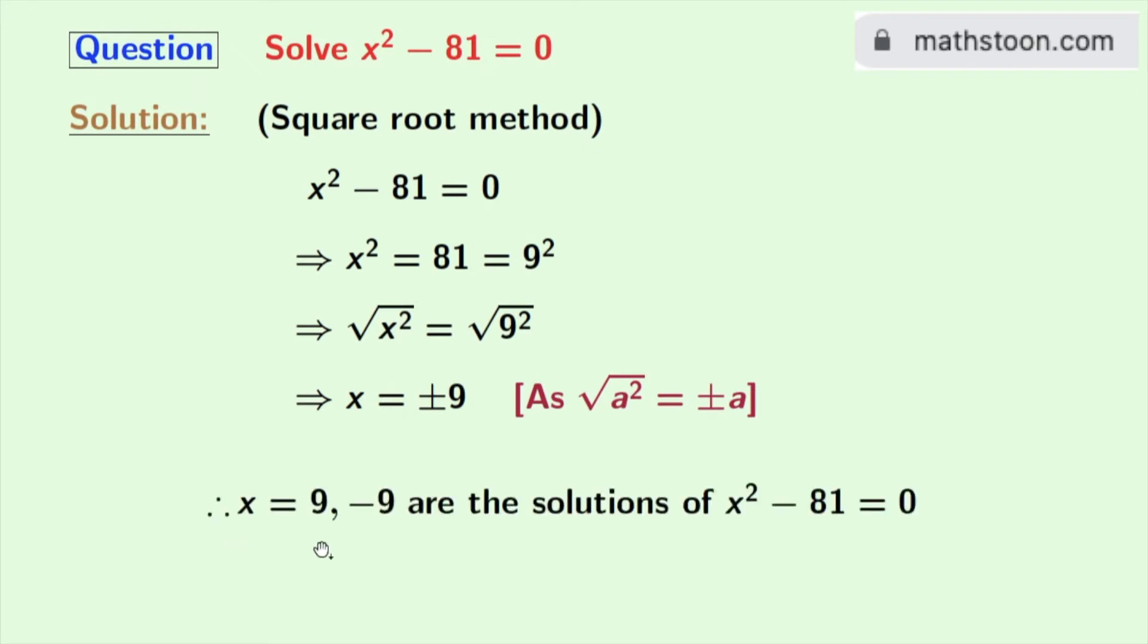So finally, x equals 9 or minus 9 are the solutions of the equation x square minus 81 equals 0.